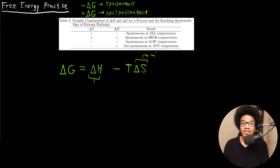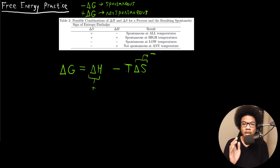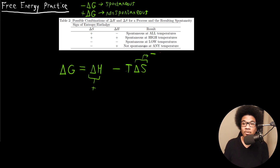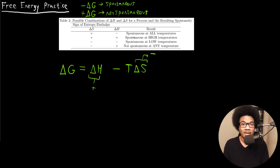The last case is if we have a negative ΔS and a positive ΔH. If this is the case, it's not going to be spontaneous at any temperature. Because you have a positive ΔH, and the TΔS term is also going to be positive. So regardless of whether temperature is high or low, it's always going to be non-spontaneous at any temperature.